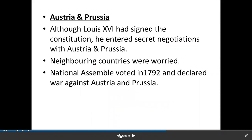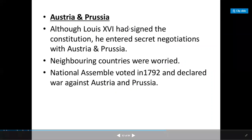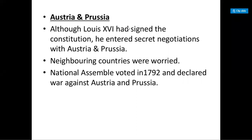France became a constitutional monarchy but the situation in France continued to be tense. During the following years, although Louis XVI signed the constitution, he entered into secret negotiations with Austria and Prussia. Rulers of other neighbouring countries were also worried about developments in France, and were ready to help Louis XVI and made plans to send troops to put down the events that had been taking place since 1789.